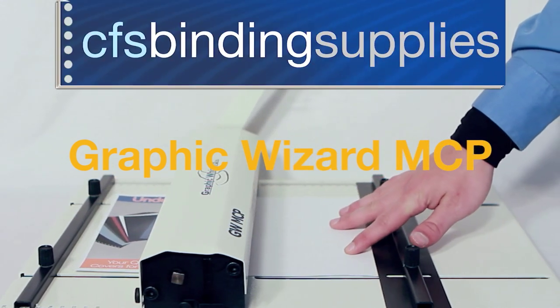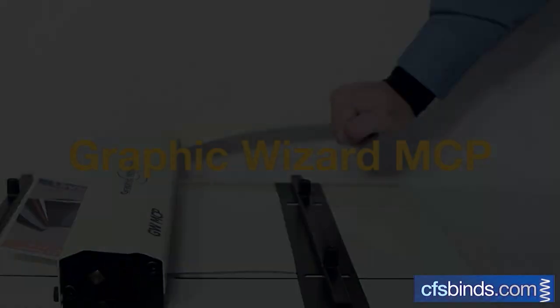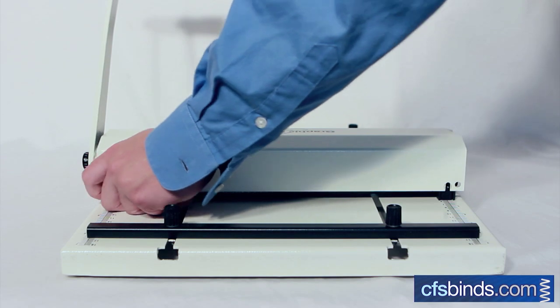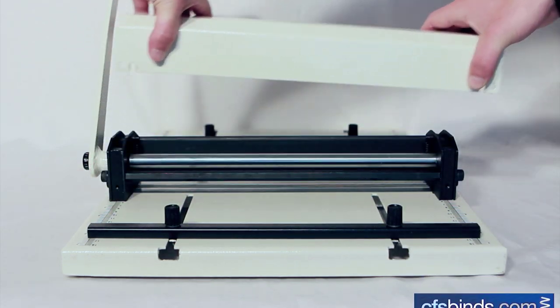Welcome to the Graphic Wizard MCP tutorial, brought to you by CFS. When perforating, we must ensure that the perf blade is facing down. To do this, you need to first remove the top cover.